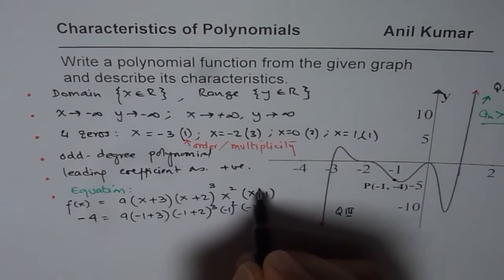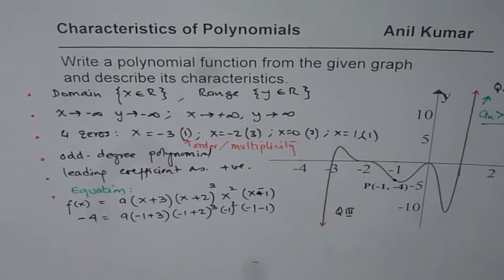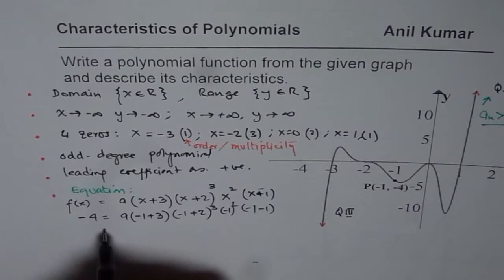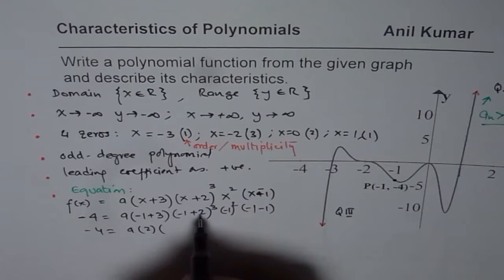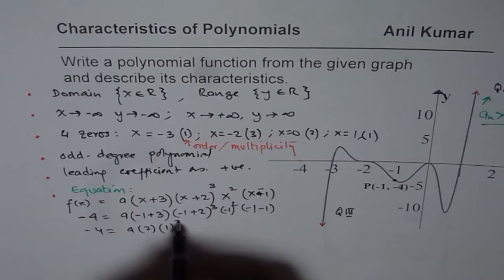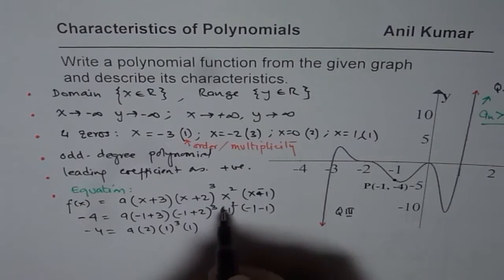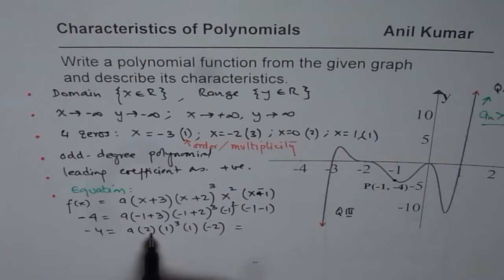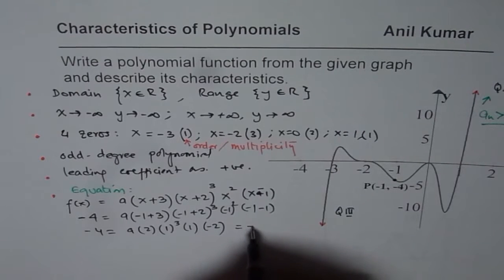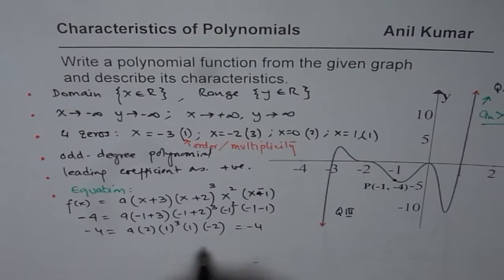I am sorry, this should have been minus 1. This 0 is at 1. So, this is minus 1. Good. Let us continue. So, it is minus 4 equals to a times, 3 minus 1 is 2. And here, we have 1 cube. Then, minus 1 squared is 1. And here, we have minus 2. So, when you multiply, you get what? 2 times 2 is 4 with a negative sign. So, we get minus 4a. So, dividing by 4, we get a equals to 1. And that gives us the equation.